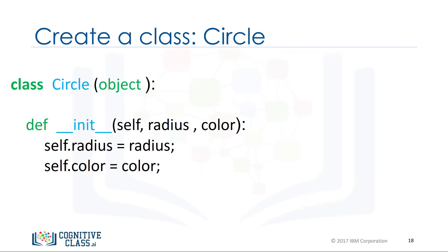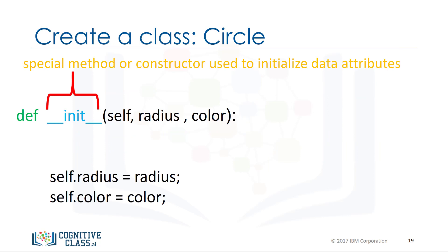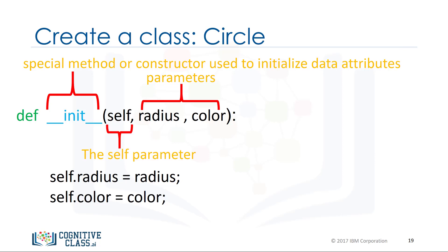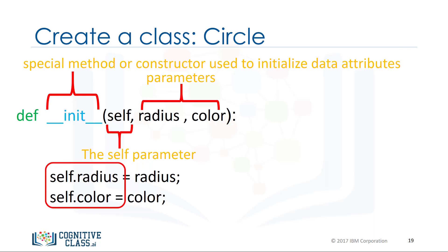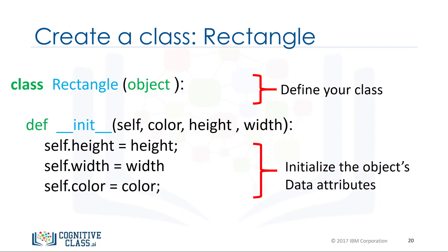Let us continue building the circle class in Python. We define our class and then initialize each instance with data attributes radius and color using the class constructor. The function init is a constructor — a special function that tells Python you are making a new class. The radius and color parameters are used to initialize the radius and color data attributes of the class instance. The self parameter refers to the newly created instance of the class. The parameters radius and color can be used in the constructor's body to access the values passed when the class is constructed. We can set the value of the radius and color data attributes to the values passed to the constructor. Similarly, we can define the class rectangle in Python — this time the class data attributes are color, height, and width.